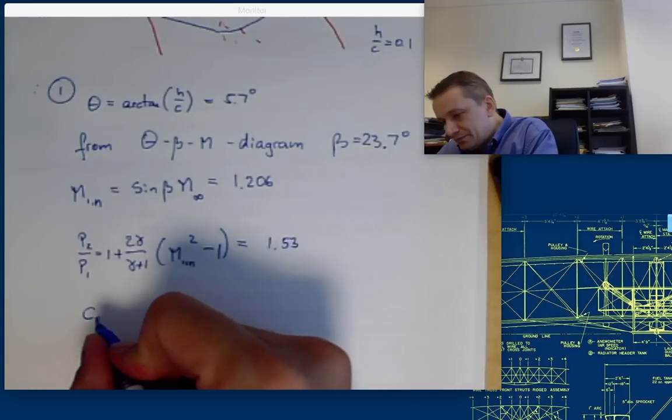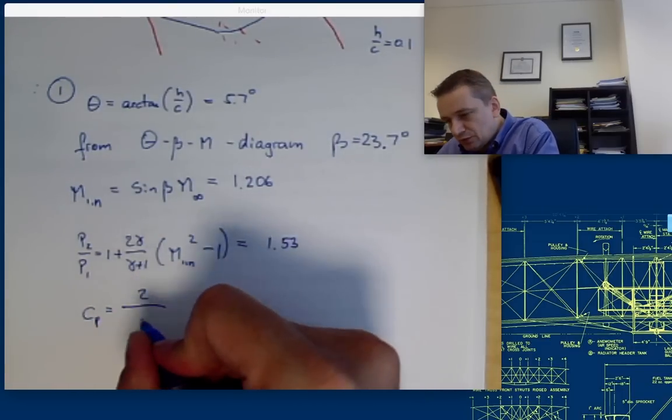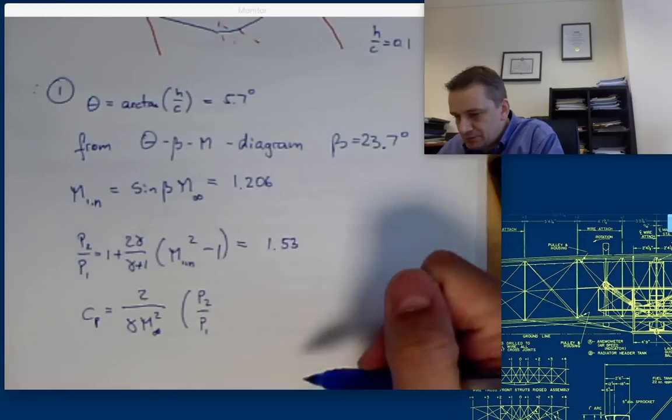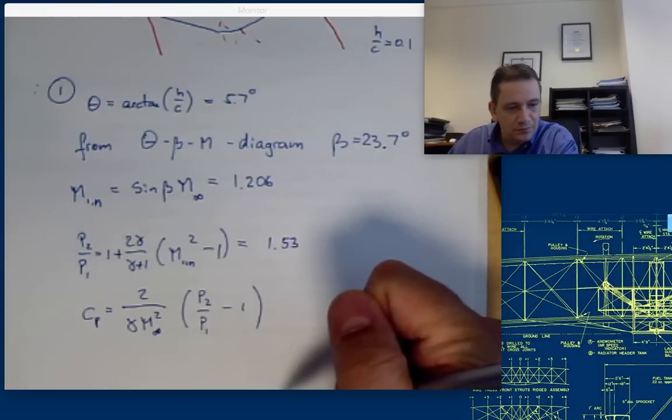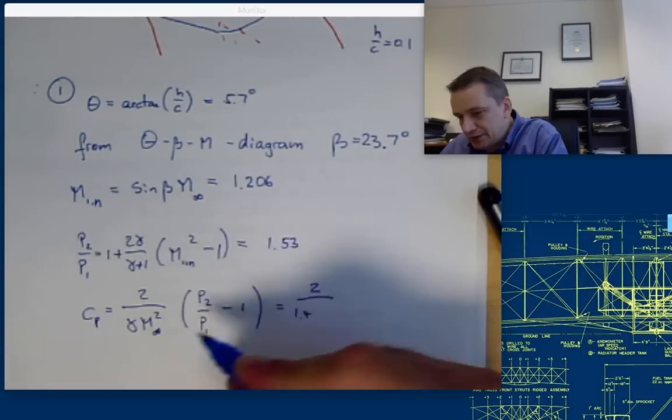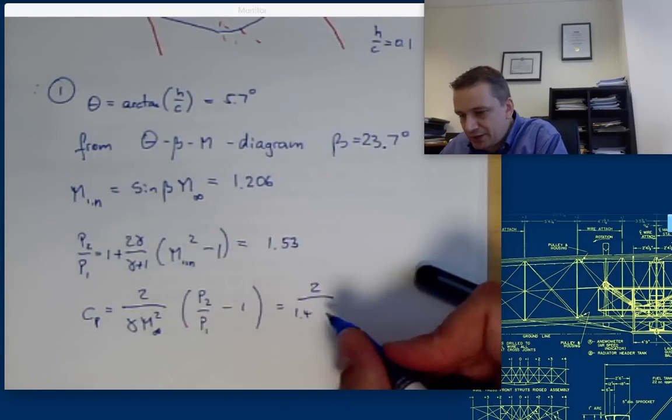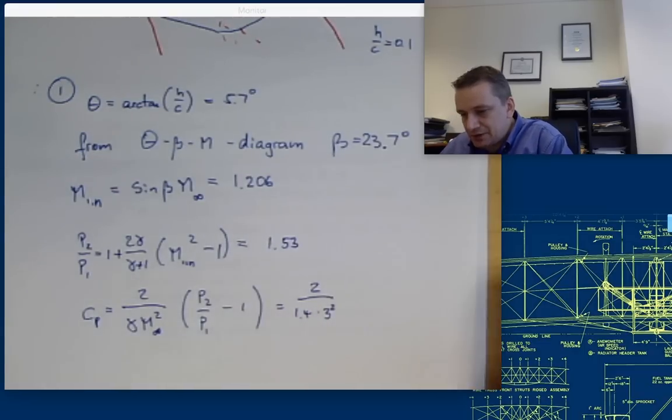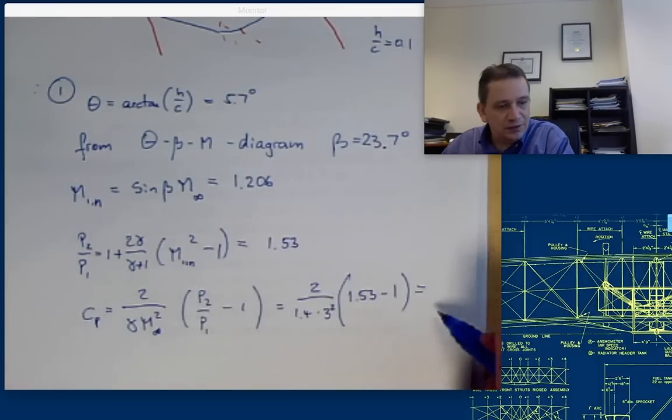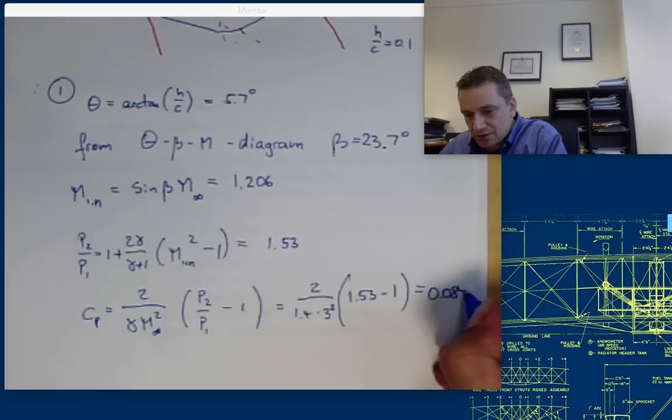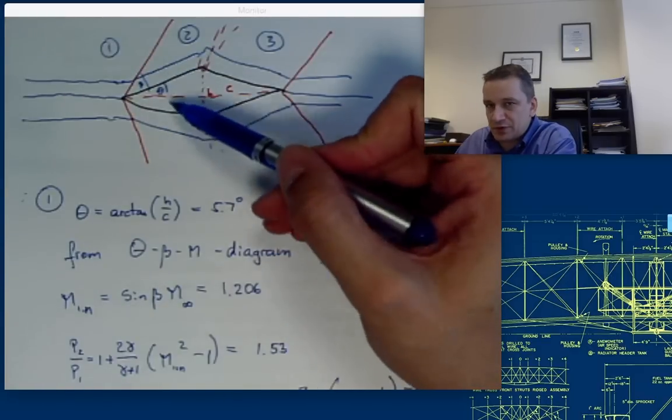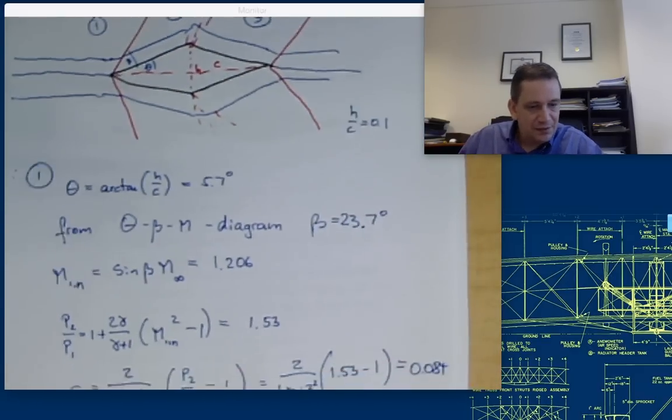I want to determine my Cp again. Cp is going to be 2 over gamma M infinity squared, P2 over P1 minus 1. So I can put my 1.53 directly inside here. I can write that out. This one is 2 over 1.4 times M infinity squared. M infinity is 3, so 3 squared times 1.53 minus 1. That's going to be 0.084. So with that, I have now determined the pressure coefficient on actually both sides because it's symmetric in this case.